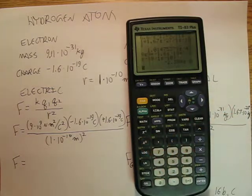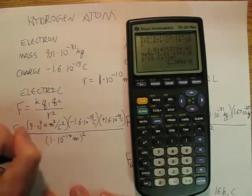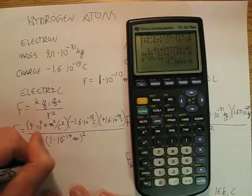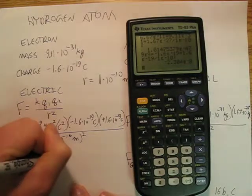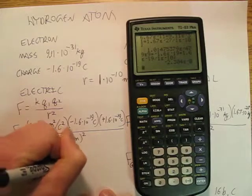Square it, and I get negative 2.3 times 10 to the negative 8th newtons.